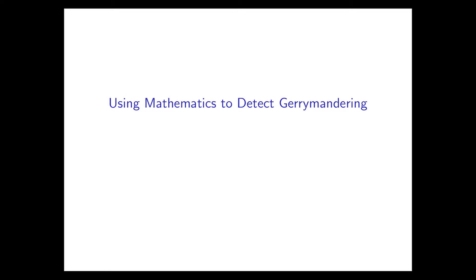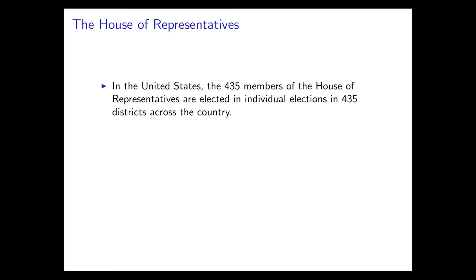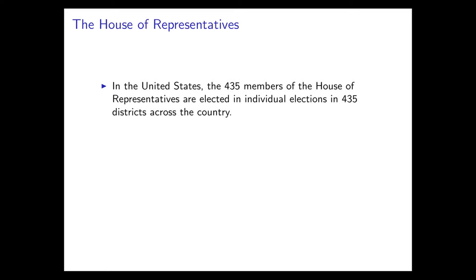Let's talk about the House of Representatives one more time. It has individual members elected in single-member districts — unlike some parliamentary system. These districts are redrawn every ten years in response to the census. There's no mathematical guarantee of proportionality in the system. There's nothing that says that if roughly 60% of the votes go to one party, they have to get roughly 60% of the seats. And there are a lot of examples where this fails to happen.